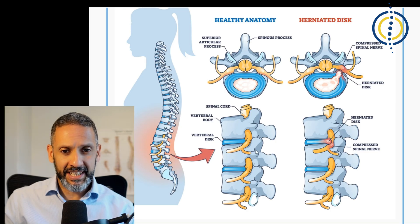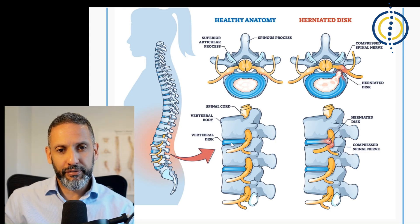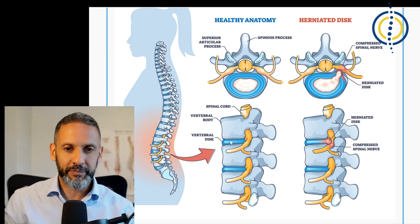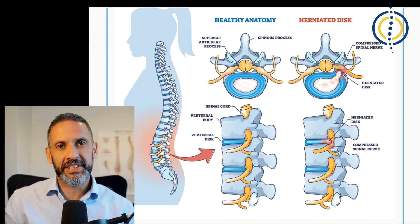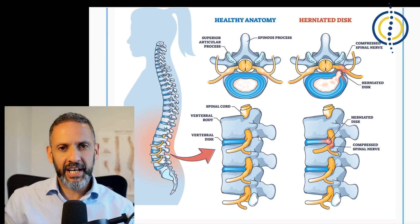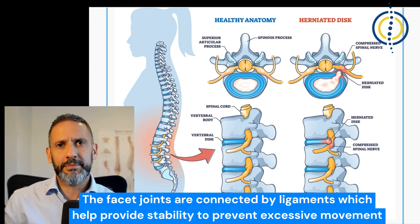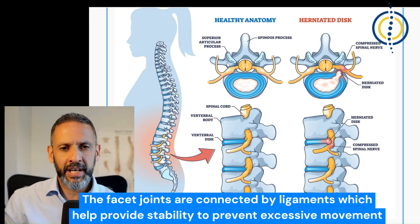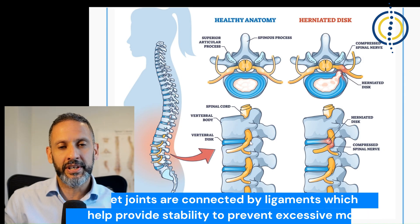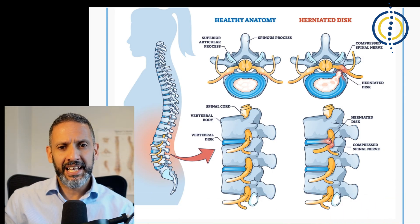Each block of bone is connected to the other at the front with a cushion called a disc, which is a type of shock absorber, and a facet joint at the back which allows a little bit of movement. Looking at a cross section, there's a facet joint on either side at each level, and these bones are strapped together by ligaments. At each level in the spine there is a window on either side through which a nerve leaves the spine.